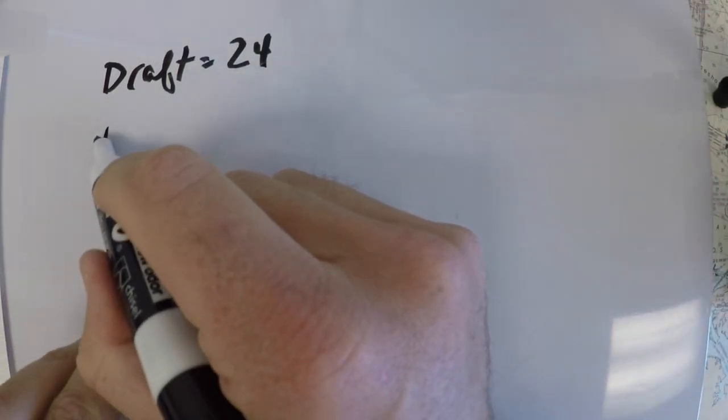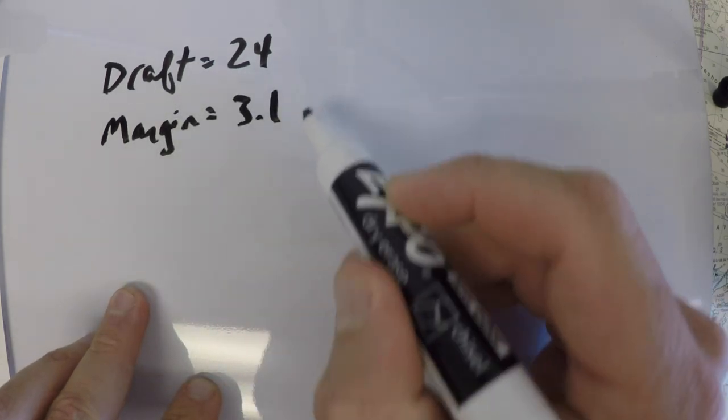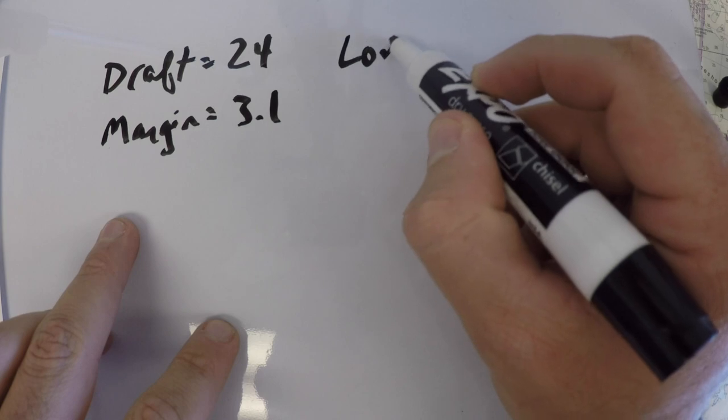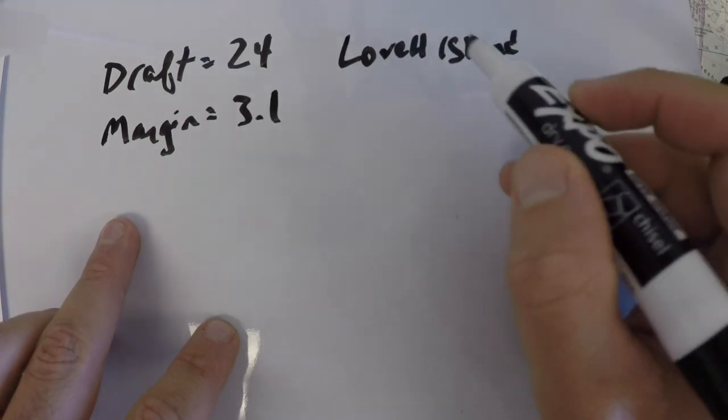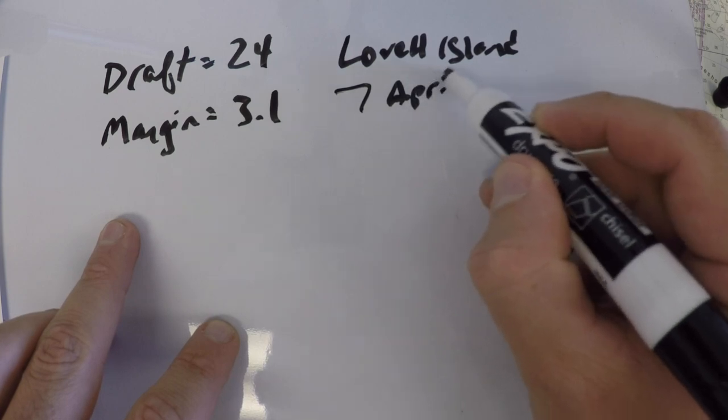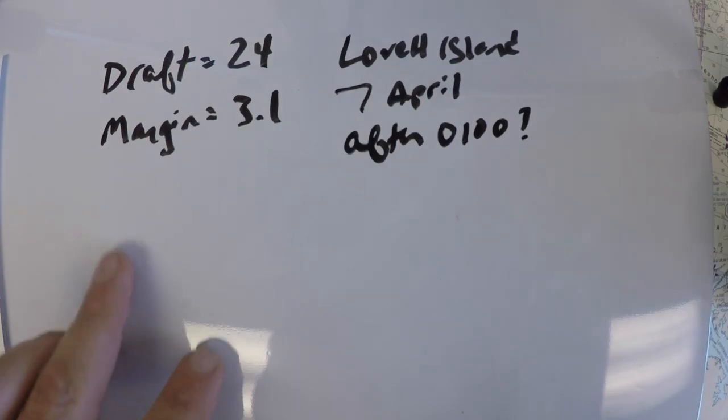We have a safety margin of 3.1 feet, and it's near Lovell Island on the 7th of April. And after 0100, what time can we pass?